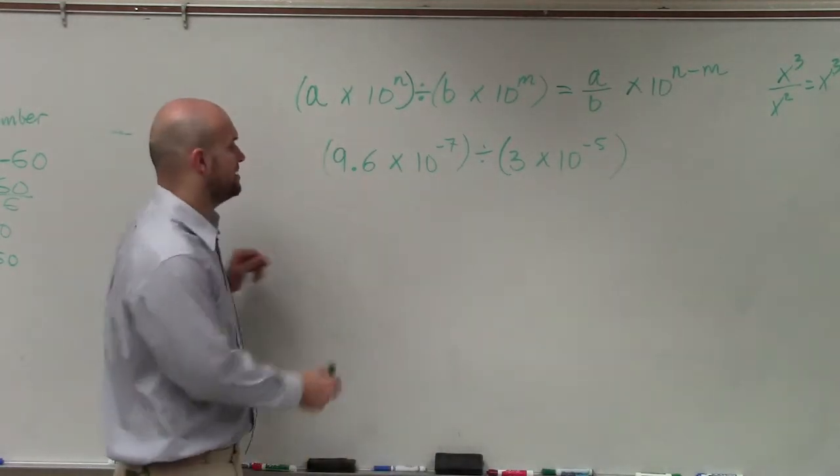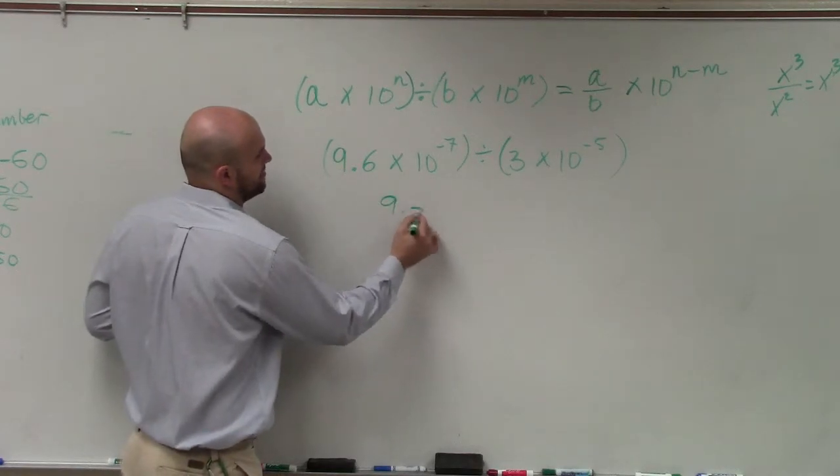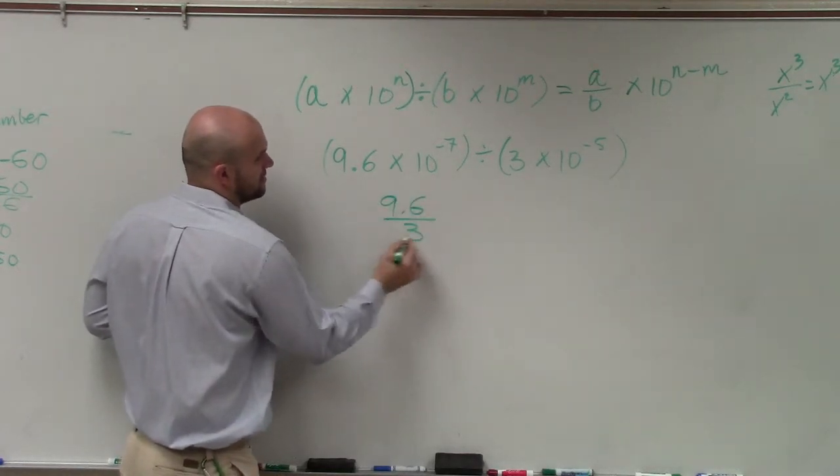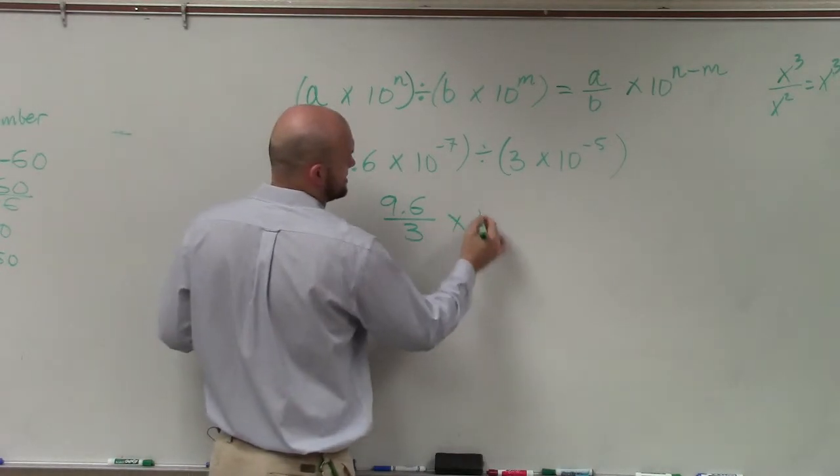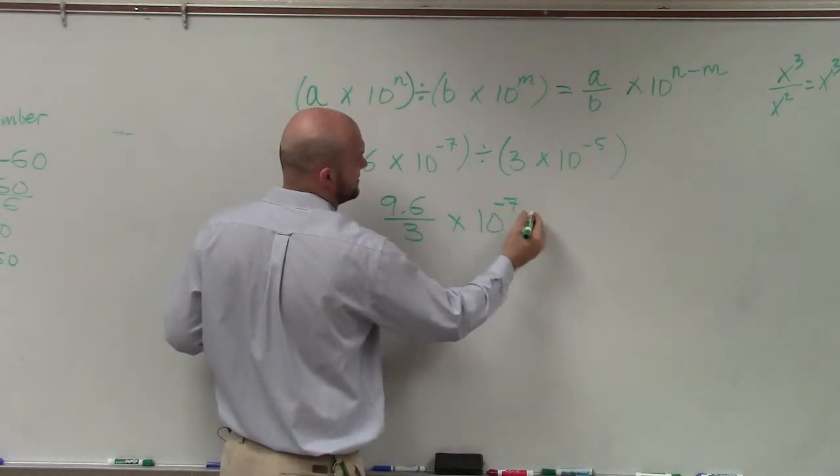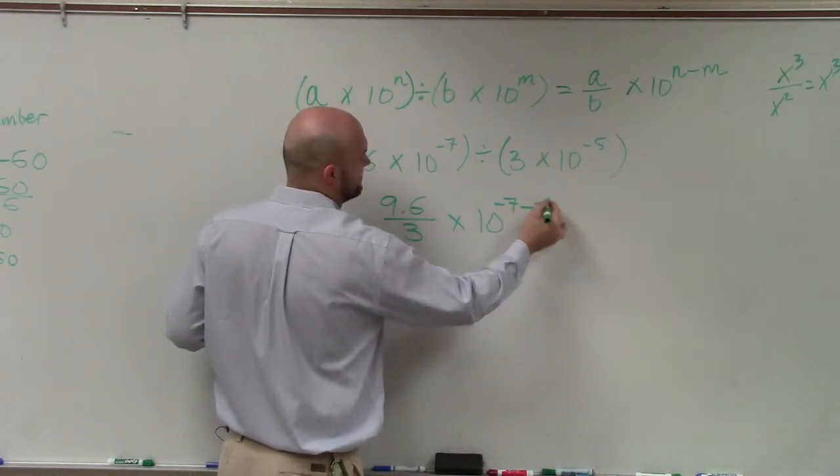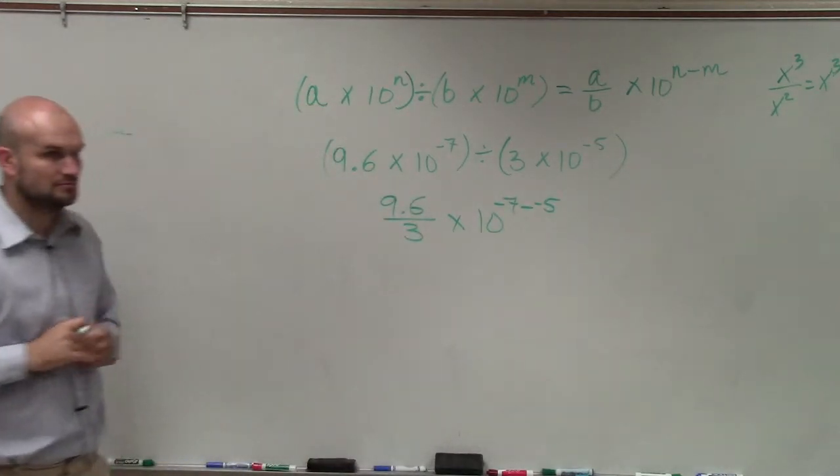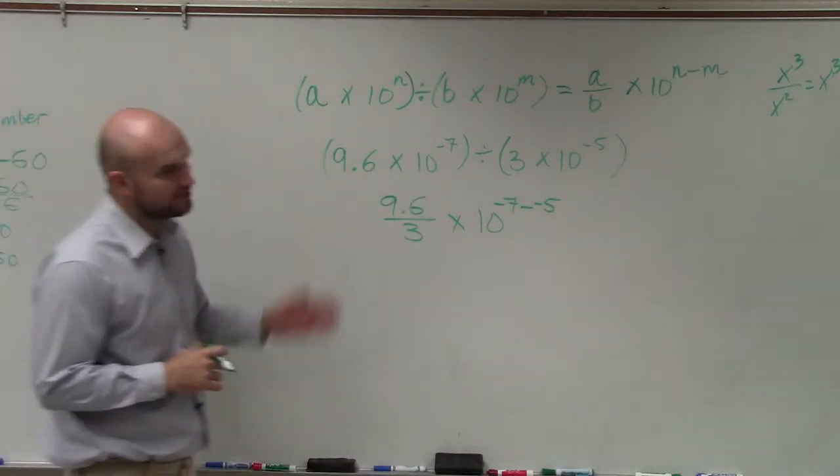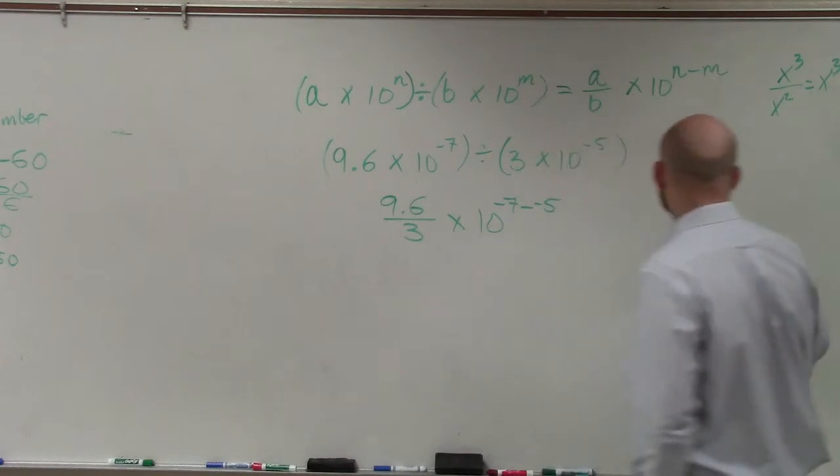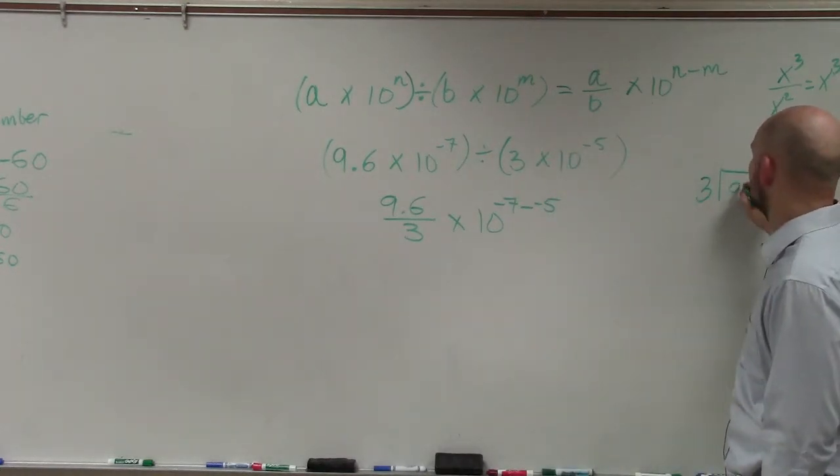So in this case, what I have is 9.6 divided by 3 times 10 to the negative 7 minus a negative 5. Now, let's go ahead and do 9.6 divided by 3. To do that, I'm going to use long division.